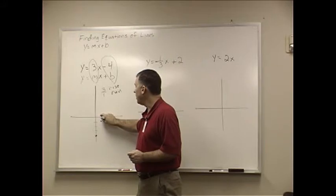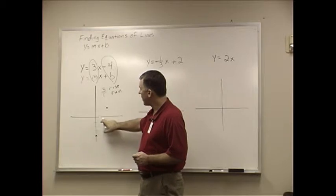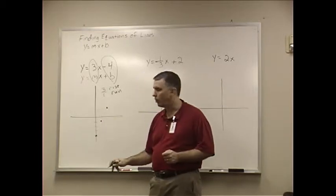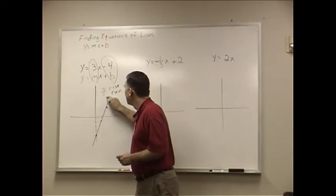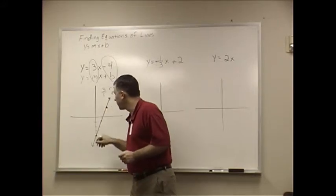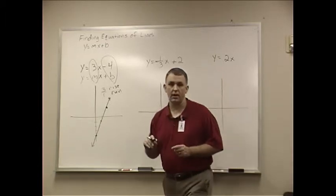I can go up 3, 1, 2, 3, over 1. And each time I go up and over, I can make a point. And then if I want to complete that graph, I draw a straight line through it, like so. So every single one of those works like that. So let's look at the second one.